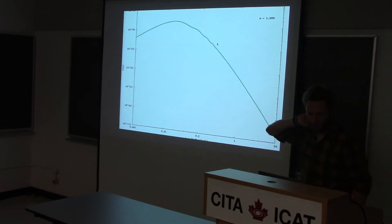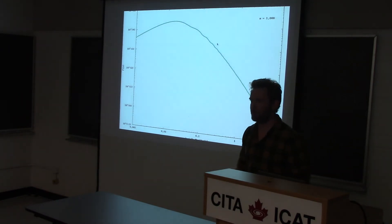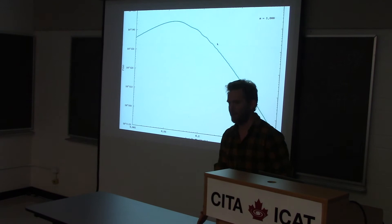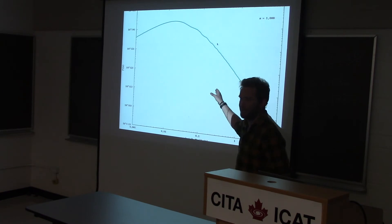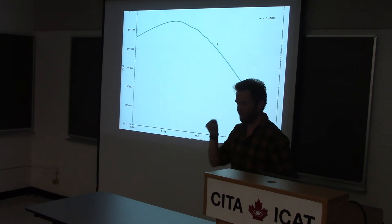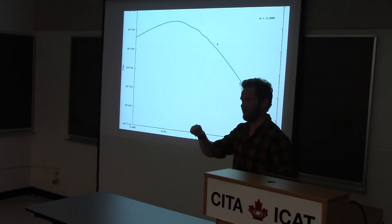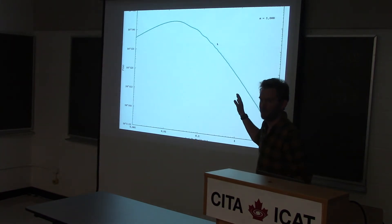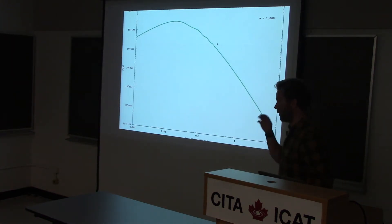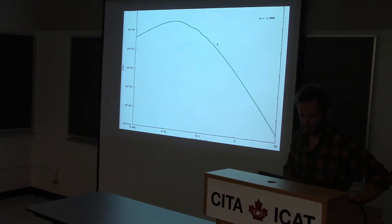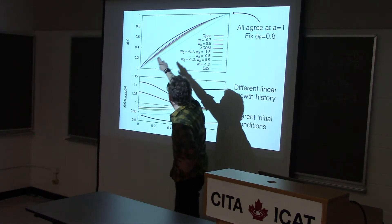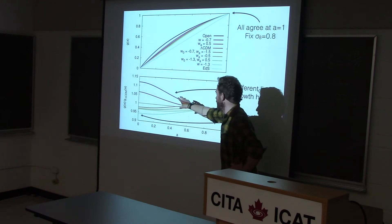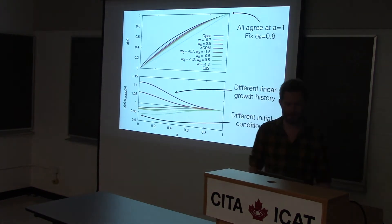Here are two linear power spectra evolving with time — I've fixed their initial amplitudes such that by redshift zero they line up exactly. One key thing to note: if your thought was that the nonlinear matter power spectrum should just be a function of the linear power spectrum, then these models would have the same nonlinear power spectrum. In a lot of perturbation theory approaches this turns out to be the case. Here are the growth factors relative to lambda-CDM — they all arrive at the same point at A=1, but via slightly different paths.